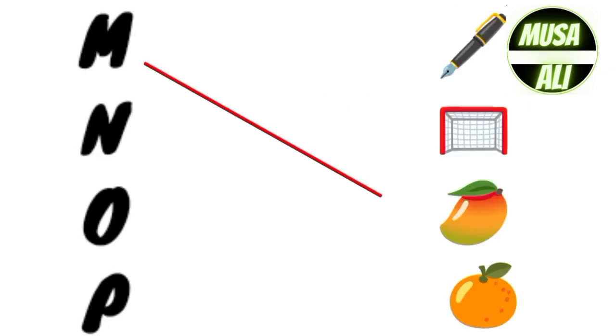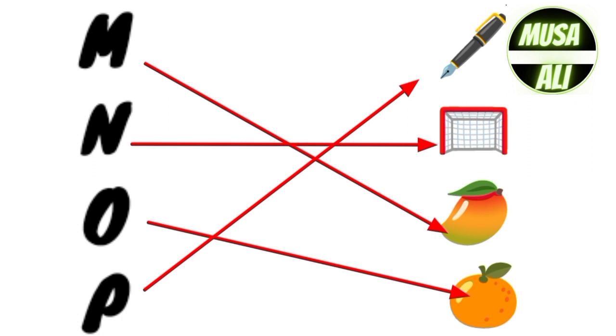M for Mango, N for Nut, O for Orange, P for Pen.